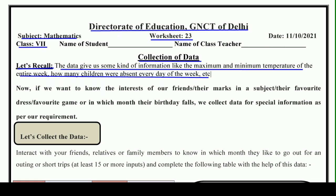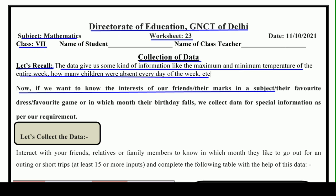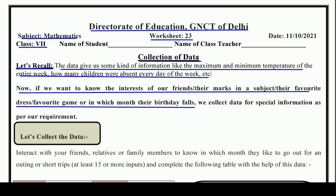If we want to know the interest of our friends — what is our friends' interest, what are their marks in a subject, what is their favorite dress, favorite game, and in which month their birthday falls — we collect data for special information as per our requirement. Whenever we need some special information, we collect data for it.